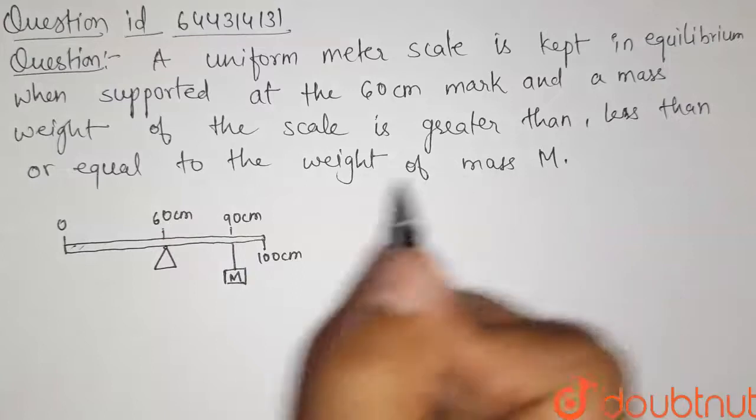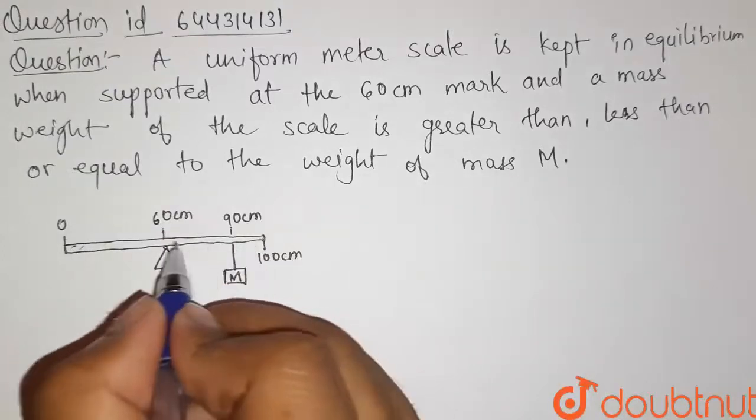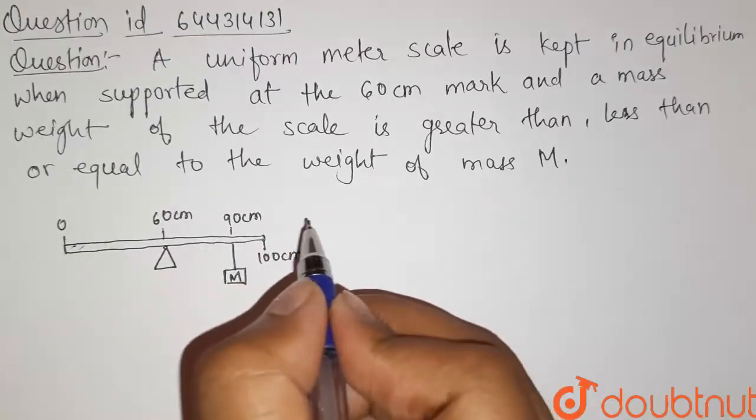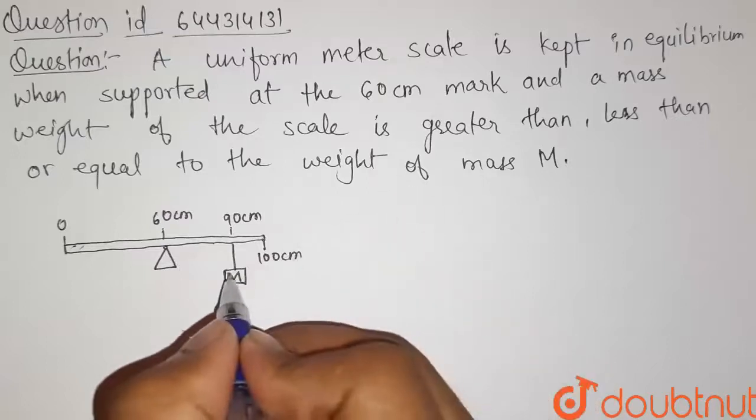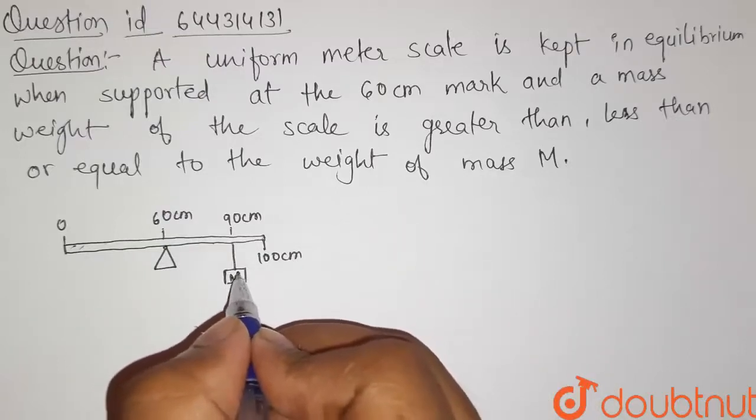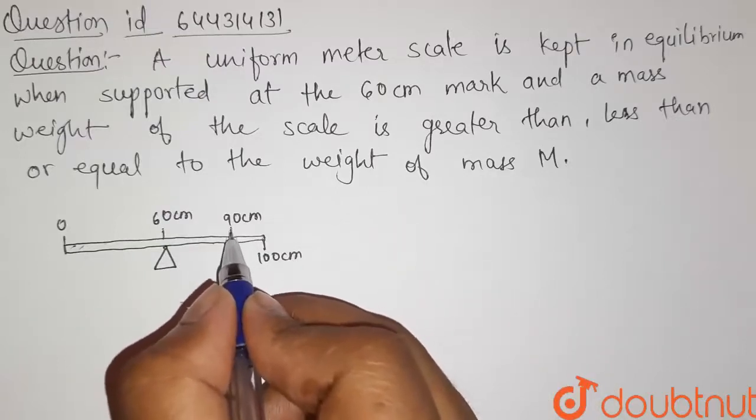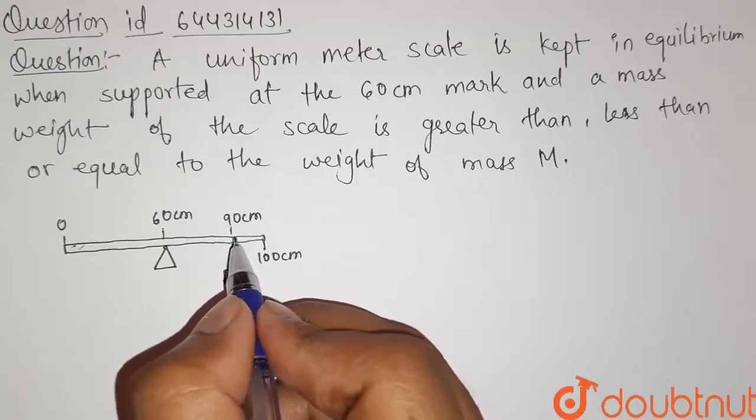So we have to tell that the mass of this rod is less than, greater than or equal to the mass of this block, which is hanging at this position of 90 cm mark.